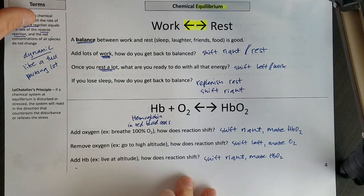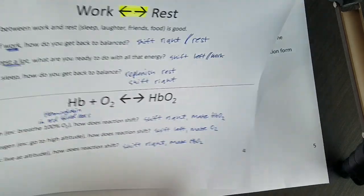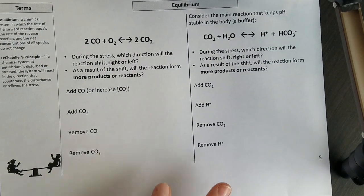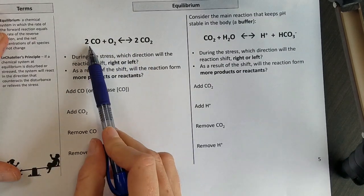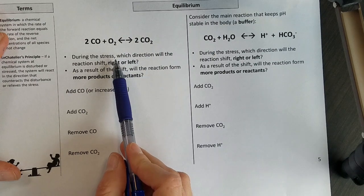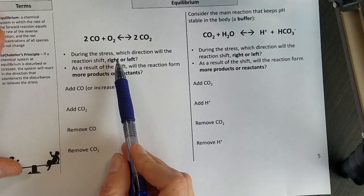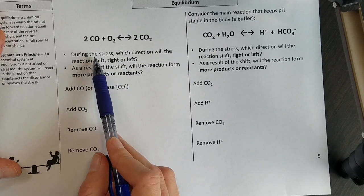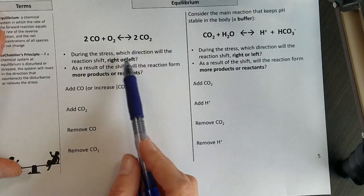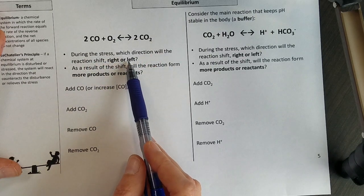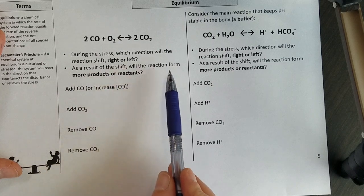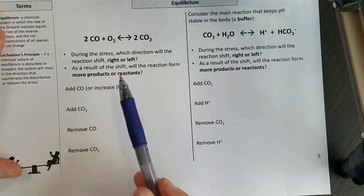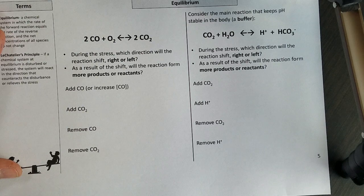So let's look at another example of this chemical equilibrium and applying Le Chatelier's principle to adjust to these stresses. Here's a reaction. You're going to answer two questions for each of these conditions. During the stress, which direction will the reaction shift, right or left, to undo that stress? And then as a result of that shift, will we form more products or more reactants? Same thing we did on the last slide.